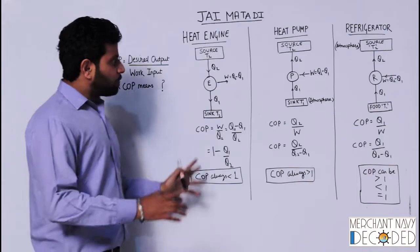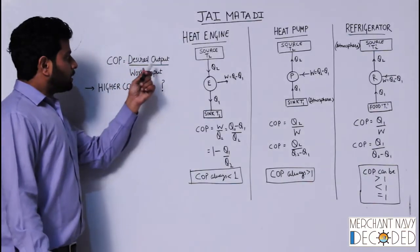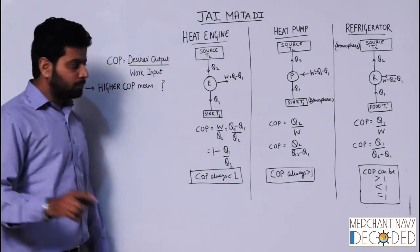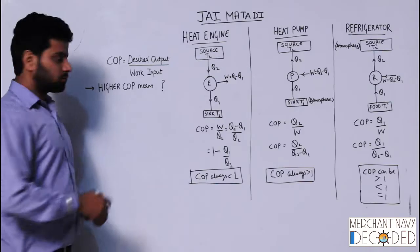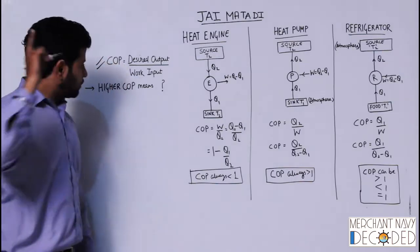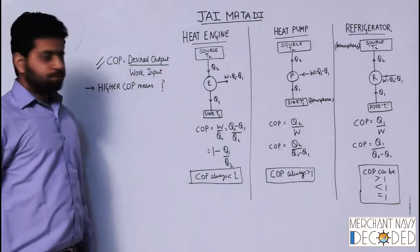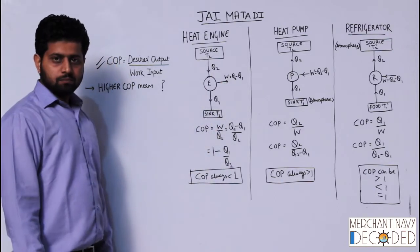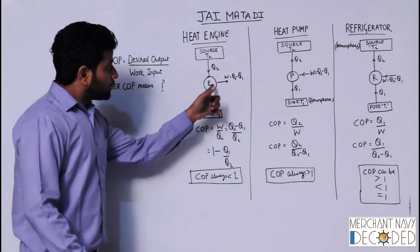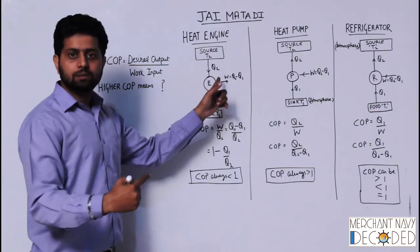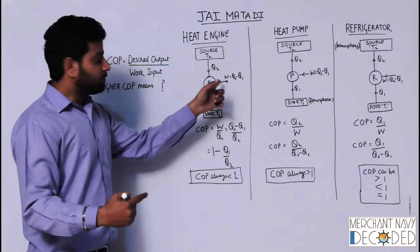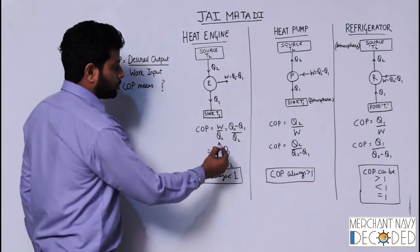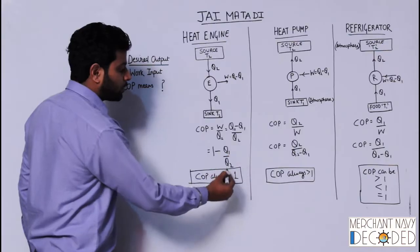So what is coefficient of performance? The definition: desired output upon work input — this you have to remember, very important. For the heat engine, what is the input? Input is Q2. And what is the desired output? That is W, because in an engine you want to see how much work you are getting. W is Q2 minus Q1. So coefficient of performance is W upon Q2, which is (Q2 minus Q1) upon Q2, which equals 1 minus Q1 upon Q2.